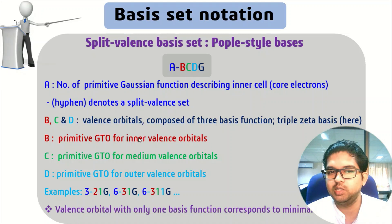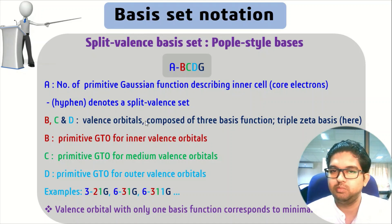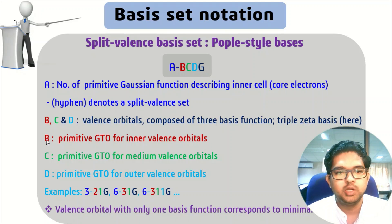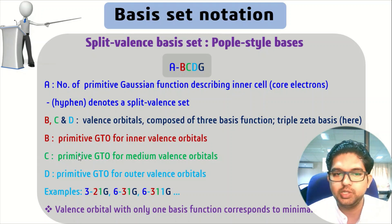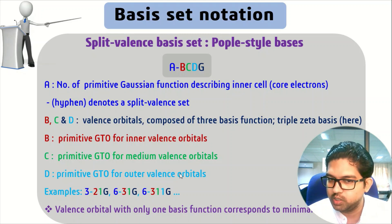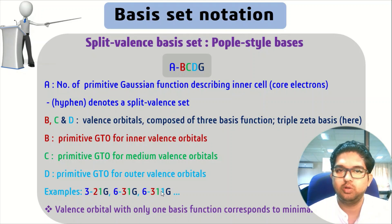If it is just two letters, then it is a valence orbital composed of two basis functions — double zeta basis. Then you have G, which stands for Gaussian type orbitals. B gives the primitive Gaussian type orbitals for inner valence electrons, C is for medium valence electrons, and D is for outer valence electrons. Examples are 3-21G and 6-31G. This type of basis set is also known as the Pople style basis set.